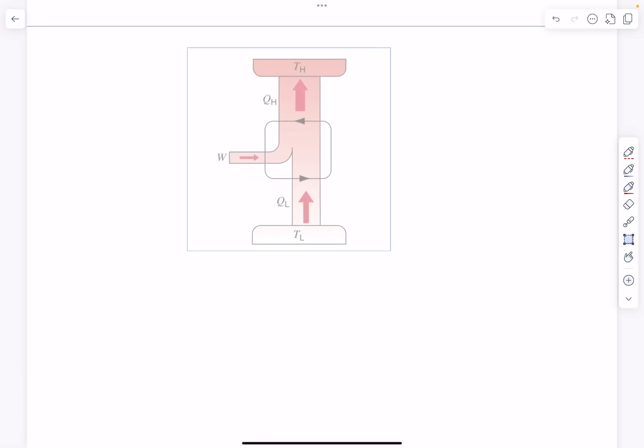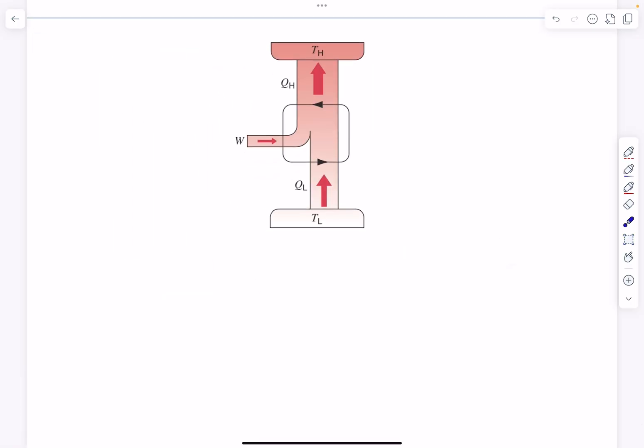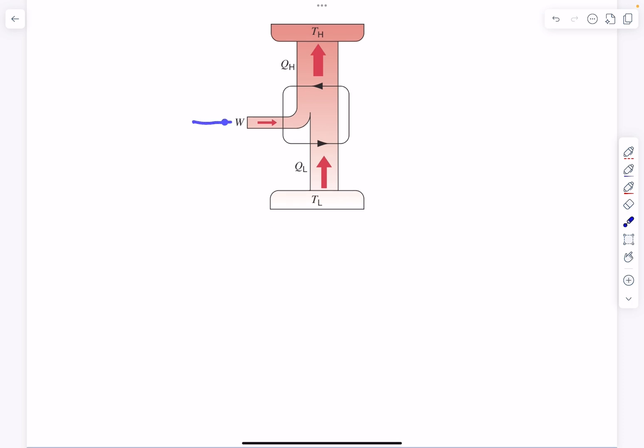The reverse Carnot engine is basically a refrigeration cycle. When we talk about the refrigeration cycle, it looks something like this. We externally provide some work to the system, which is in the form of electrical input in the case of an air conditioner.